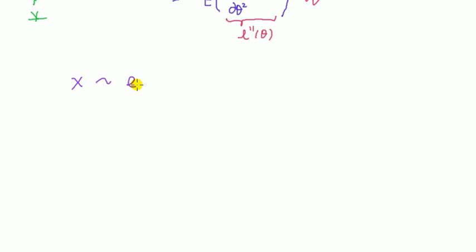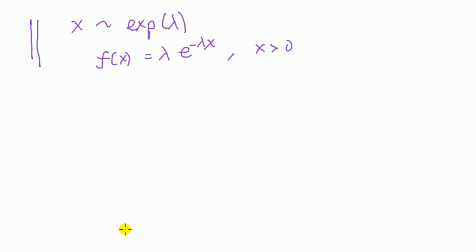Let's say we have a model where a variable follows an exponential distribution with parameter lambda, and I'm using the following parameterization: f(x) = λe^(-λx) for x > 0.